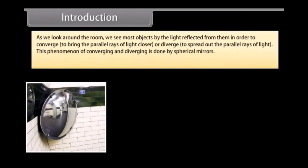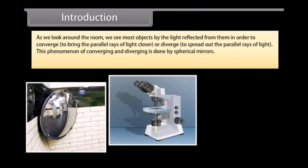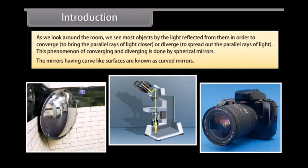As we look around the room, we see most objects by the light reflected from them. In order to converge or diverge parallel rays of light, the phenomenon of converging and diverging is done by spherical mirrors. The mirrors having curve-like surfaces are known as curved mirrors.